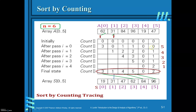In the first iteration, 5 comparisons are made to get the actual count for the first element. Then 4, 3, 2, 1 comparisons follow for subsequent elements. The total number of comparisons is 5 plus 4 plus 3 plus 2 plus 1, which equals 15 — more generally this is n(n−1)/2.